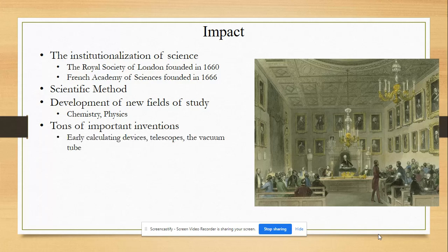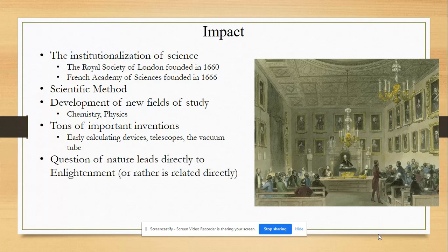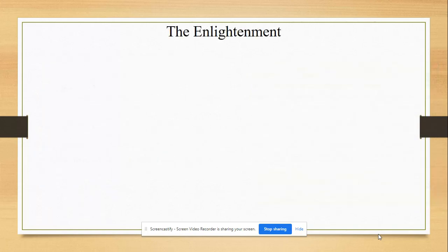Tons of important inventions can be related back to this time period: early calculating devices, dramatically improving telescopes, and the vacuum tube — which is going to be really important when we get to the 19th and 20th centuries. The connection to the Enlightenment should be clear. These two things are directly related and happening concurrently. The Scientific Revolution is roughly the 1500s to 1600s and the Enlightenment is the 1600s to 1700s, so they overlap. I usually view it as scientific revolution first, Enlightenment second — that's a little bit of a misnomer, but it's pretty close.